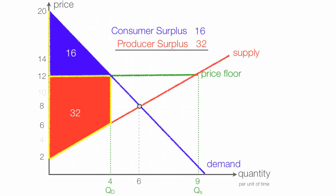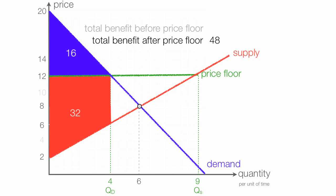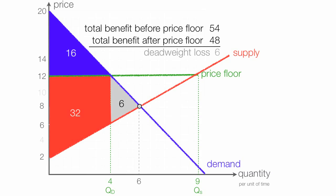Total benefit after a price floor is 48. Remember, total benefit before the price floor was 54. That means we have a deadweight loss to society of 6 — 54 minus 48. That 6 is represented by the gray triangle — so that's deadweight loss. I could calculate the area of the two triangles: the top triangle has area 4 and the bottom triangle has area 2, and 4 plus 2 is 6.